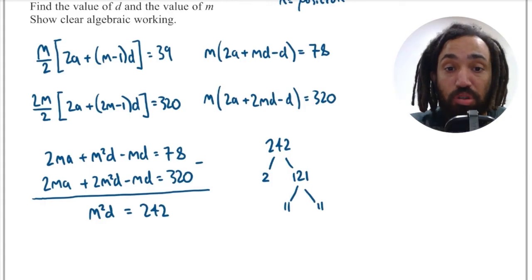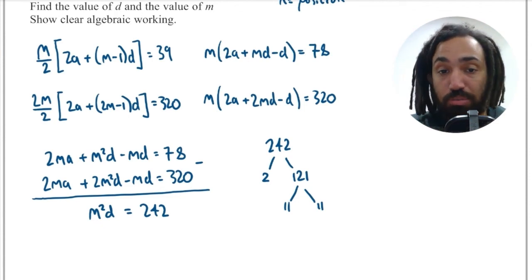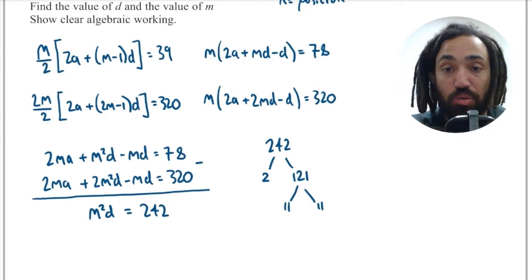Well I could let M squared equal 121 or I could let M squared equal 1 actually as a possibility. And if M squared was 1 then that would mean that D would be 242. But that's not possible because we were told that D is equal to a prime.